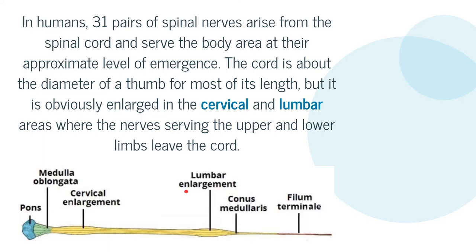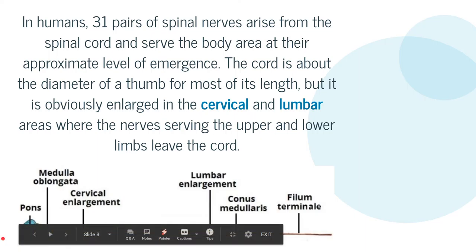In humans, 31 pairs of spinal nerves arise from the spinal cord and serve the body area at their approximate level of emergence. The cord is about the diameter of a thumb for most of its length, but is obviously enlarged in the cervical and lumbar areas, where the nerves serving the upper and lower limbs leave the cord.